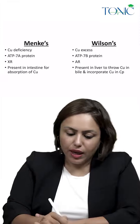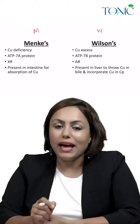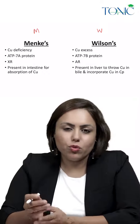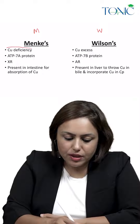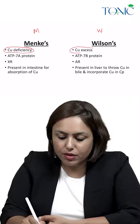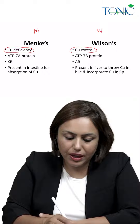Welcome to this short video on Menkes and Wilson disease. M for Menkes and W for Wilson — M comes before W alphabetically, so in Menkes there is less copper (copper deficiency), and in Wilson there is copper excess.